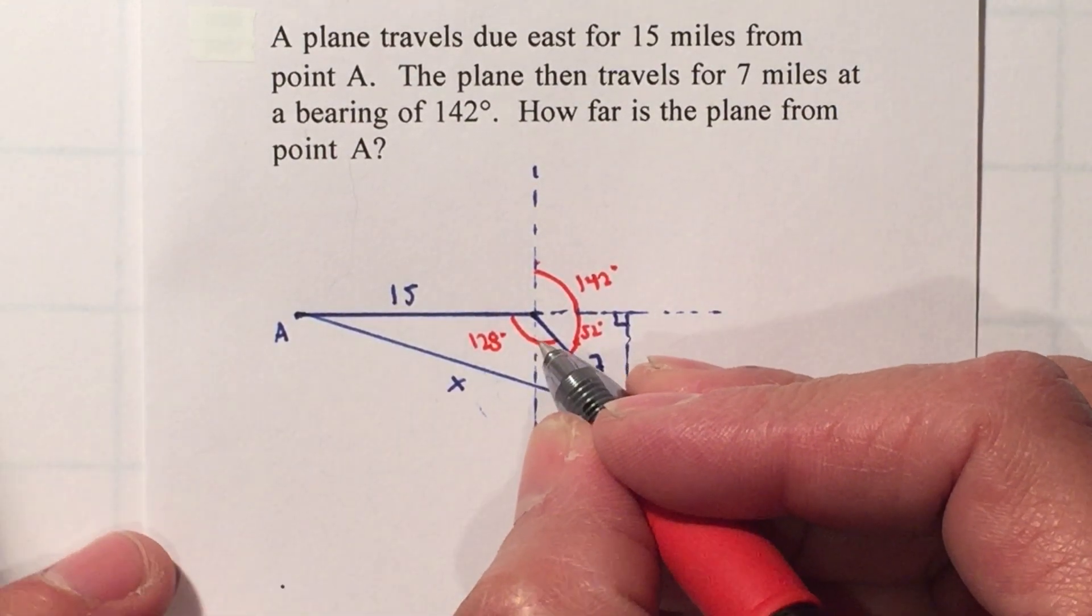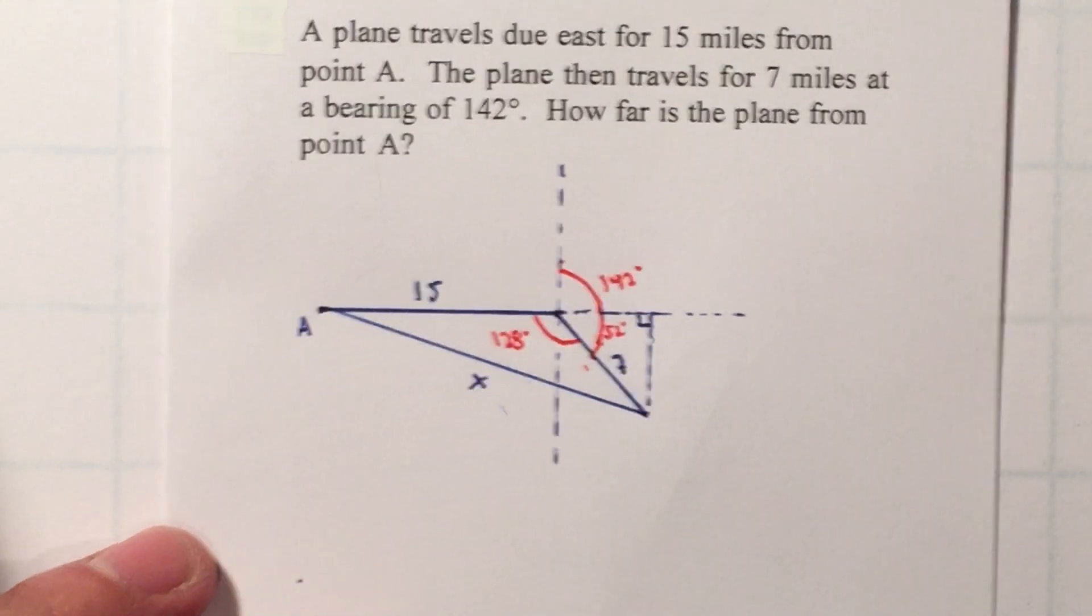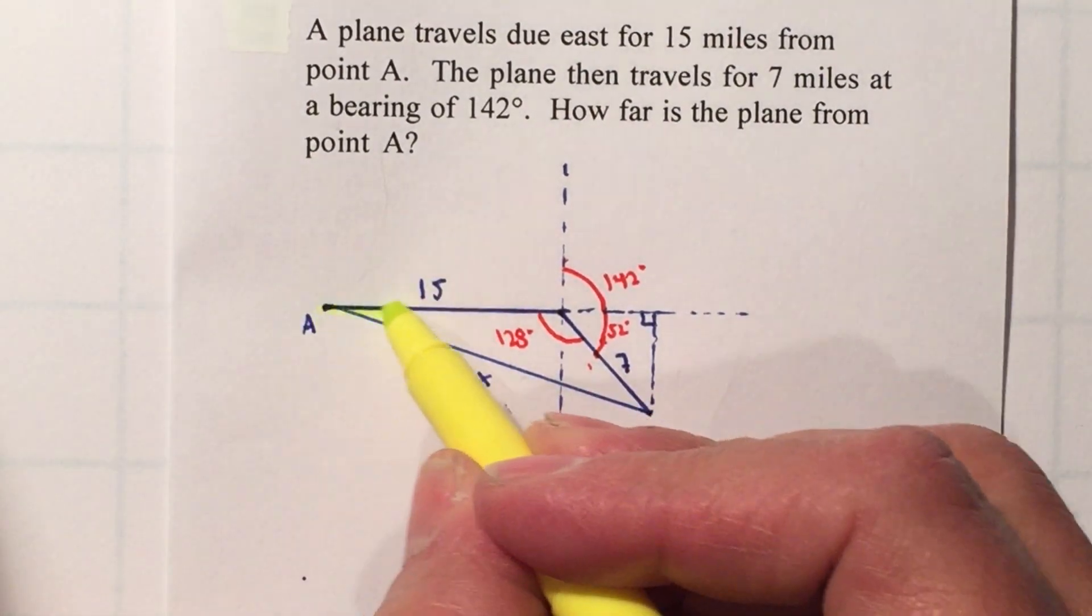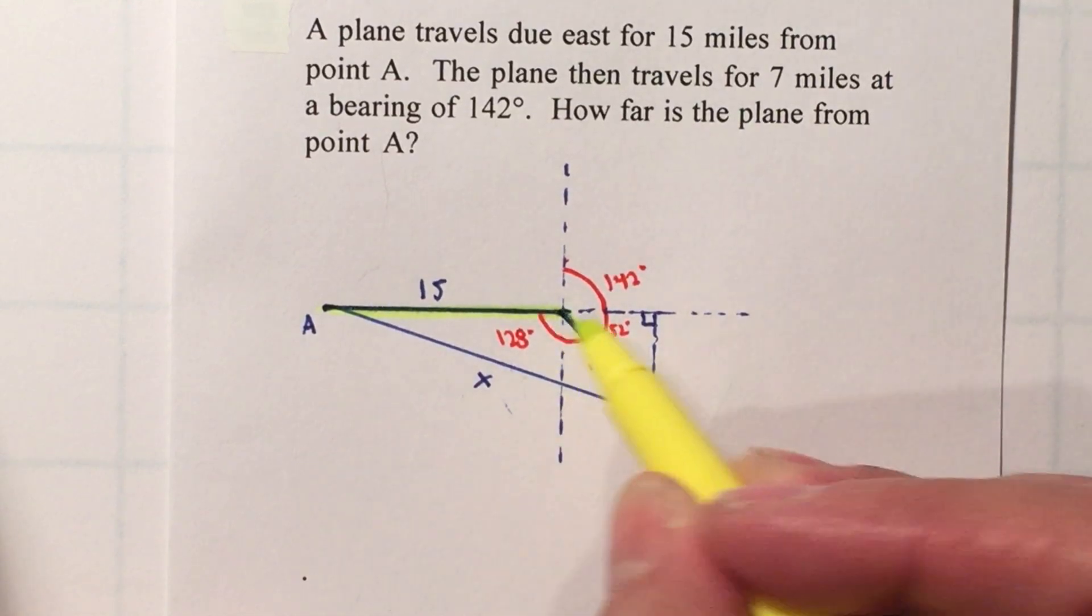So now that I know that this is 128°, I can use the law of cosines. Remember, for the law of cosines you need two sides and then go in between.